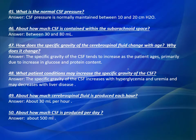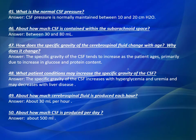Question Number 48: What patient conditions may increase the specific gravity of the CSF? Answer: The specific gravity of the CSF increases with hyperglycemia and uremia, and may decrease with liver disease. Question Number 49: About how much cerebrospinal fluid is produced each hour? Answer: About 30 milliliters per hour. Question Number 50: About how much CSF is produced per day? Answer: About 500 milliliters of CSF is produced per day.